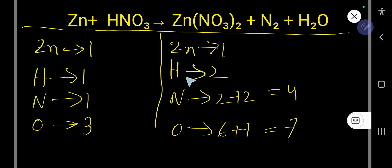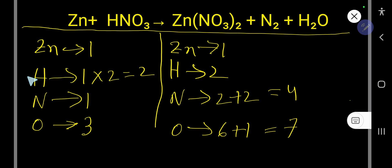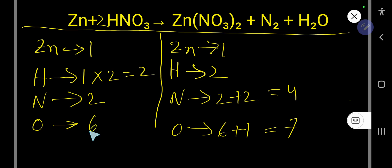Since nitrogen and oxygen are present in more than one compound, we first try to balance atoms present in a single compound. Hydrogen appears as 2 on the left and 1 on the right. To balance hydrogen, multiply by something that gives you 2. That coefficient goes before the water molecule, so place 2 here. Now the number of hydrogen is 2, nitrogen is 2, and oxygen is 2 times 3 which is 6.